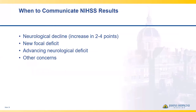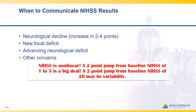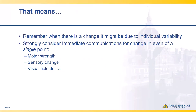When to communicate NIHSS results: if the patient has any neurological decline — an increase of two to four points — remember the NIHSS is not a linear exam. A change from one to three points, such as going from able to move both arms to unable to move one, is a huge change compared to moving from 22 to 24. Also notify the provider if you notice any new focal deficit or advancing neurological deficit, or if scores have been increasing across shifts. Even a change of a single point in motor strength, sensory, or visual field deficits warrants immediate communication.